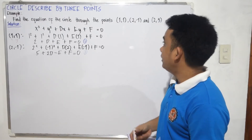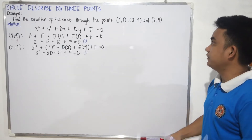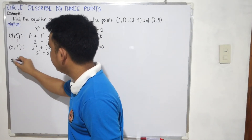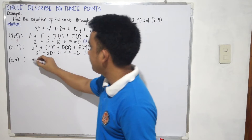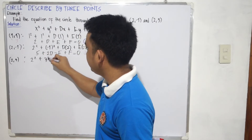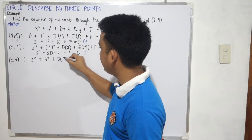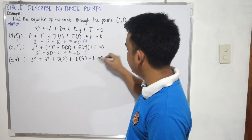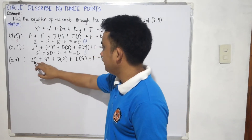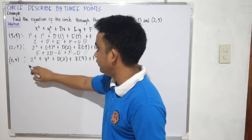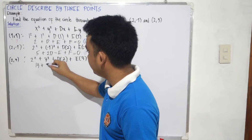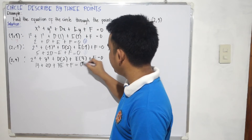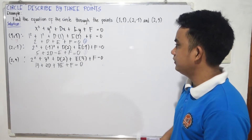For our third equation, using point (2, 3): 2 squared plus 3 squared plus d times 2 plus e times 3 plus f equals 0. 2 squared is 4 plus 3 squared which is 9. 4 plus 9 is 13, so 13 plus 2d plus 3e plus f equals 0. This is our equation number 3.